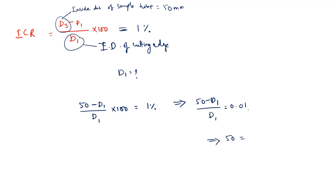Solving: 50 − d1 = 0.01 × d1, so 50 = 1.01 × d1, giving d1 = 50 / 1.01, which is approximately 49.5 mm.